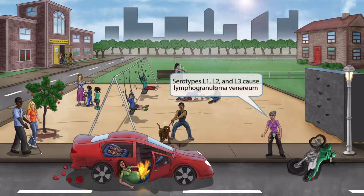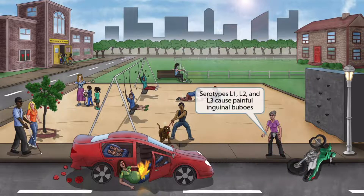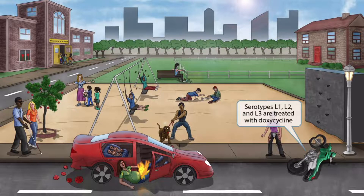Another victim of the accident is an old granny who was riding a dirt bike when she was hit by the red car. She has wounds on the side of her legs, so she'll be limping around. Limping granny sounds like lymphogranuloma, and she's next to the lamp — so serotypes L1, L2, and L3 cause lymphogranuloma venereum. This is a sexually transmitted infection characterized by a painless genital ulcer and inguinal lymphadenopathy (inguinal buboes). She was wearing a cup on her crotch — the cup protected her, just like the genital ulcers of lymphogranuloma venereum are painless. The red swollen lesions near her inguinal region indicate painful inguinal buboes. The dirt bike is our symbol for doxycycline, so serotypes L1, L2, and L3 are treated with doxycycline.